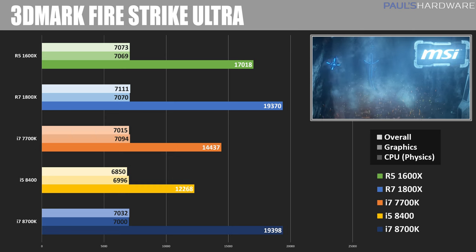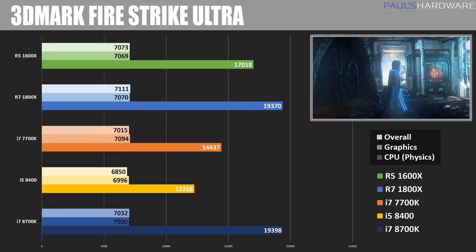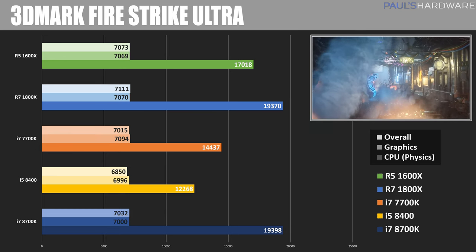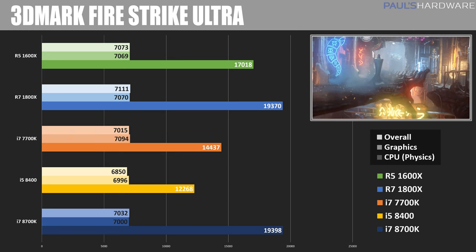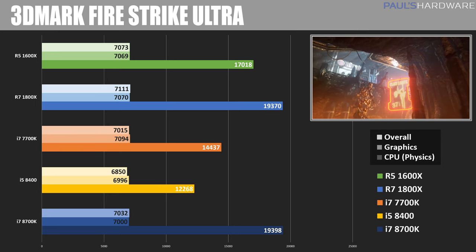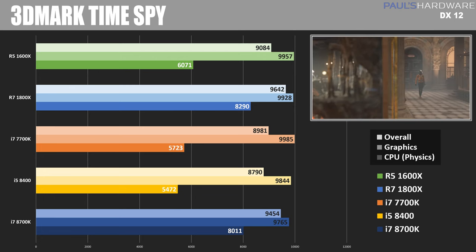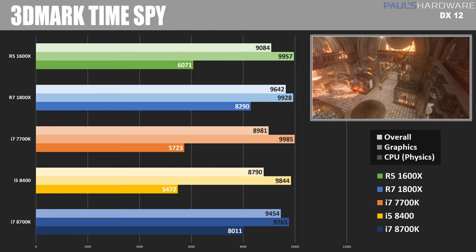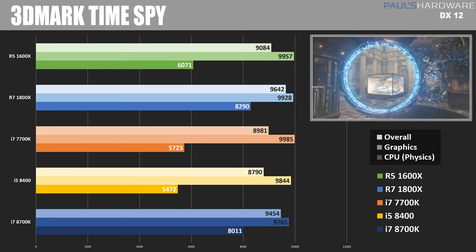Switching to some gaming tests — these are synthetic so they include some CPU-specific scores. 3DMark Firestrike Ultra shows overall scores that are all comparable to each other, because your CPU's performance often has less impact on overall gaming performance than your GPU. The physics test, which primarily taxes the CPU, saw the 1800X come in with 19,370, while the 8700K just edges ahead at 19,398. Moving on to 3DMark Time Spy — similar to Firestrike Ultra but DirectX 12 — scores are in the same general ballpark, although the 8700K and 1800X both lead the pack, suggesting an advantage with more cores and threads.